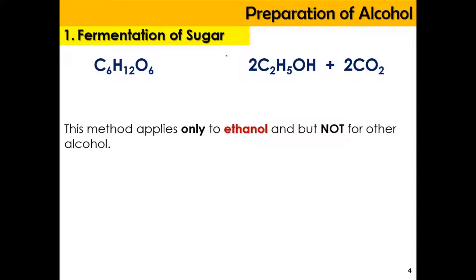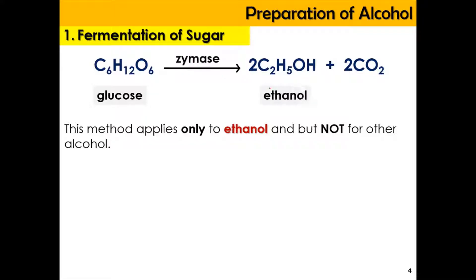The first method is the fermentation of sugar. Sugar can be represented in the form of glucose, and when it is catalyzed with the enzyme zymase, we're going to produce ethanol and carbon dioxide. This method is applied only to the production of ethanol, and it is not applicable for other alcohols.